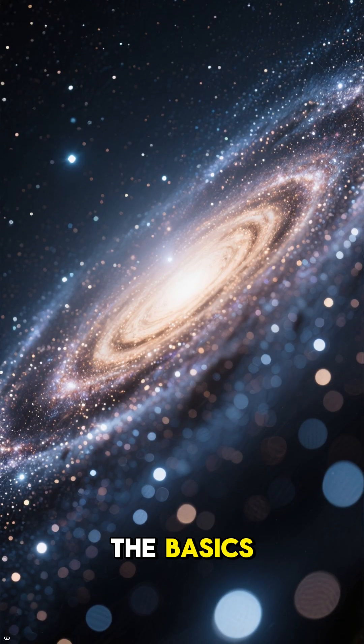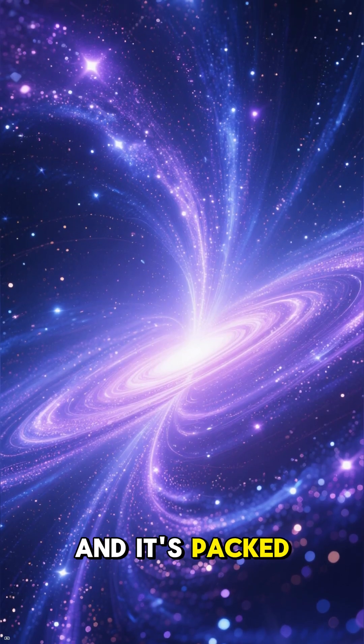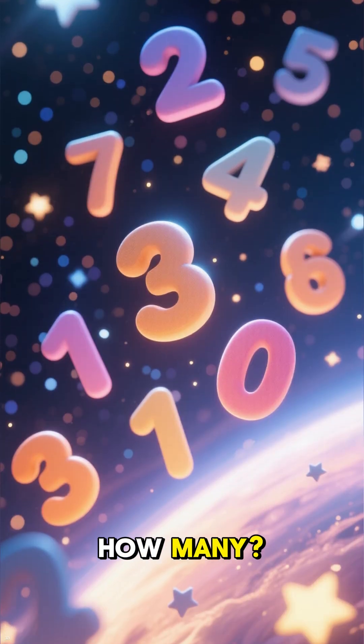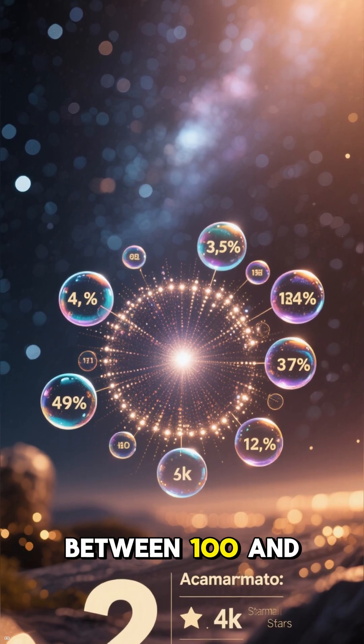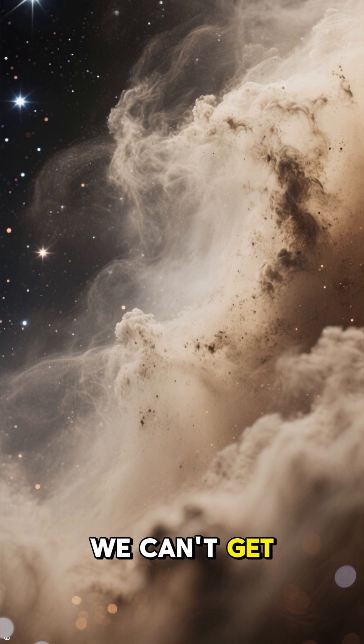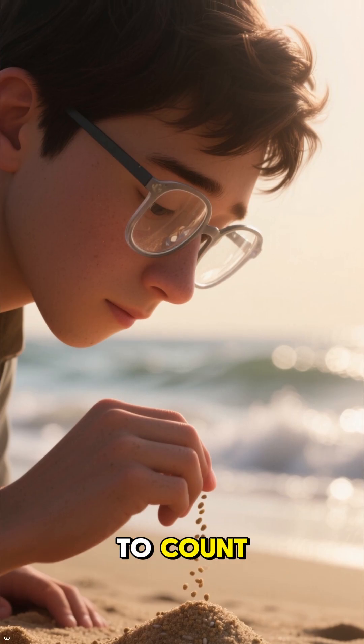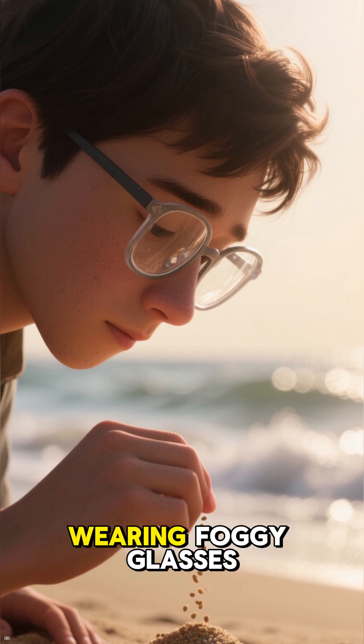Let's start with the basics. The Milky Way is a barred spiral galaxy, and it's packed with stars. How many? Scientists estimate there are between 100 and 400 billion stars. We can't get an exact count because huge clouds of cosmic dust are blocking our view. It's like trying to count all the grains of sand on a beach while wearing foggy glasses.